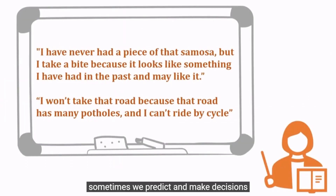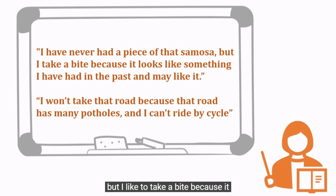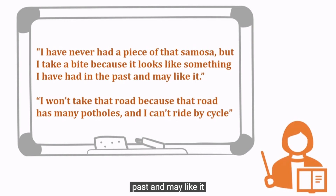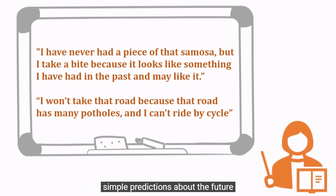Sometimes we predict and make decisions about things without even thinking about it. For example, I have never had a piece of that samosa but I would like to take a bite because it looks like something I have had in the past and may like it. I won't take that road because it has many potholes and I can't ride my cycle. Based on past data, we can make some simple predictions about the future.